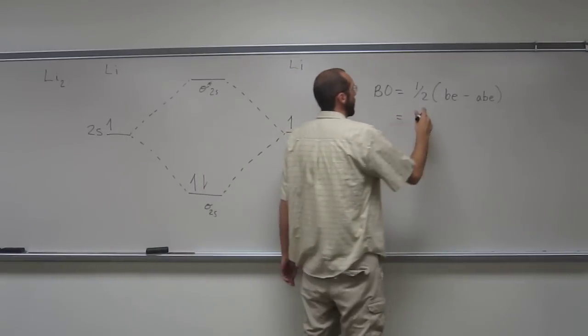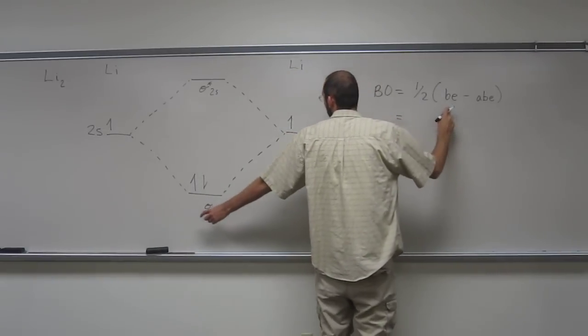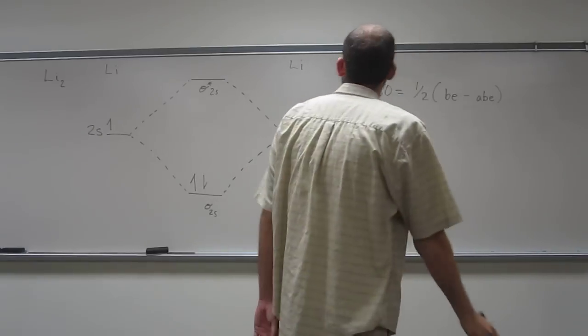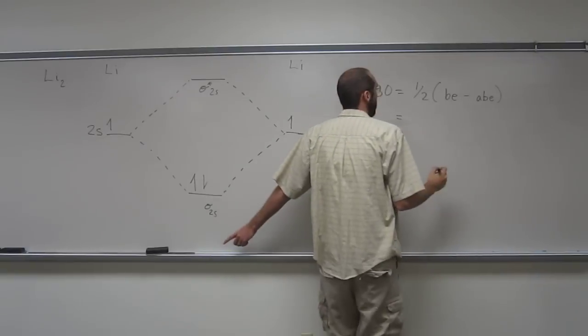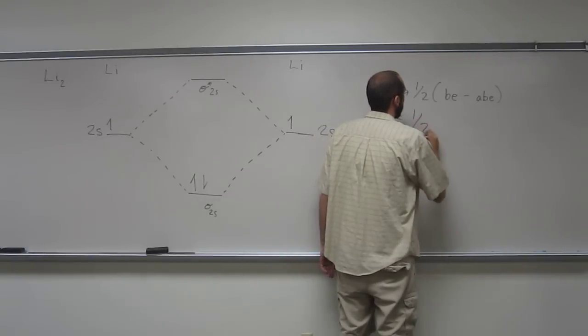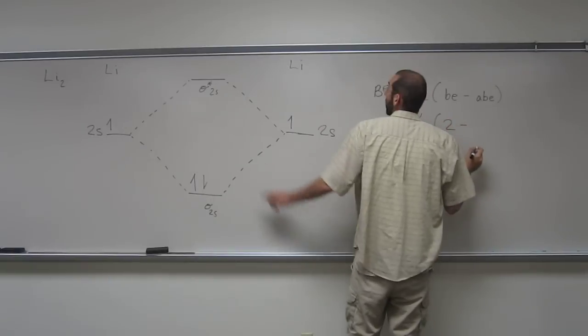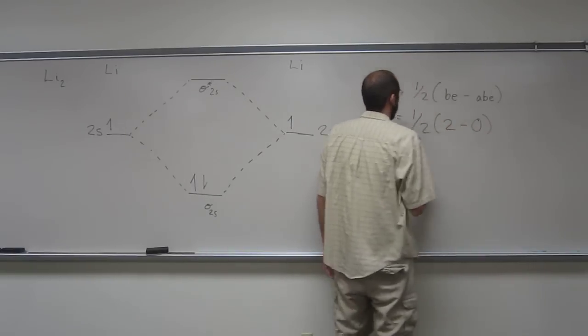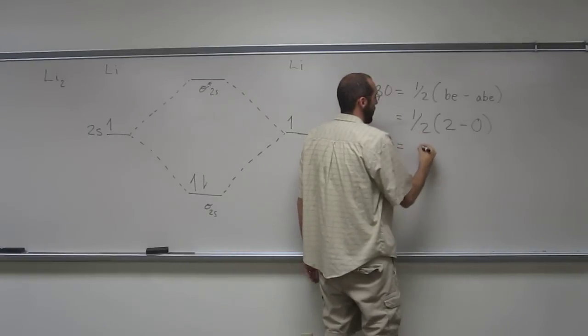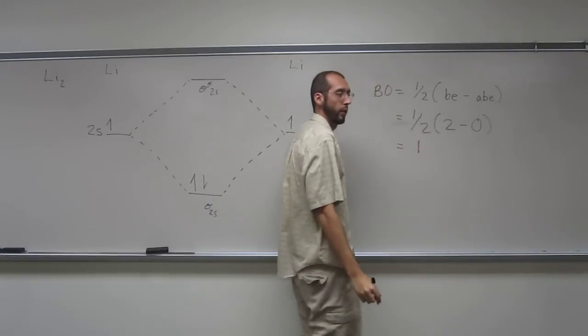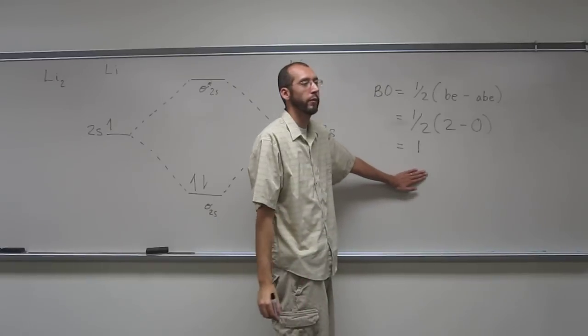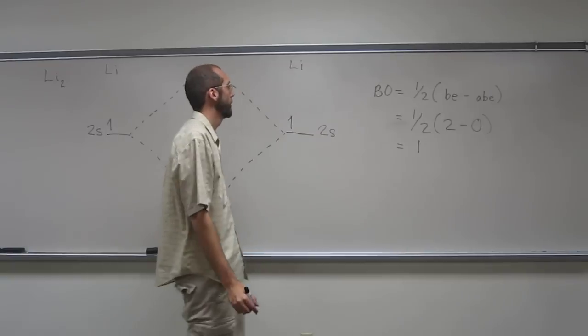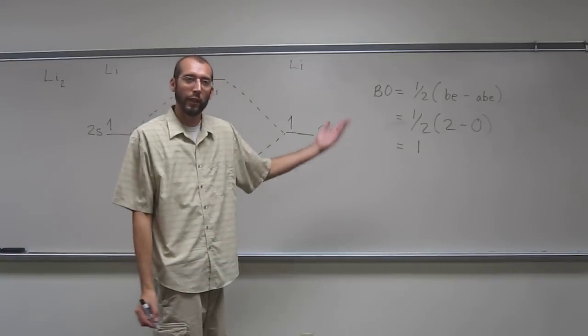So the number of bonding electrons is the ones that are in the non-starred orbitals. So bonding electrons is going to be two. And anti-bonding electrons are in the star orbitals. So in that case, it's going to be zero. So the bond order is going to be one. Remember, if it's over zero, then it exists, right? So does this exist or not? Yes.